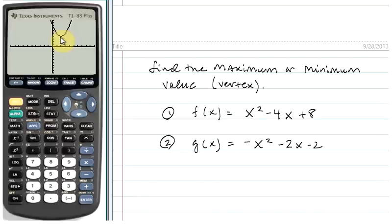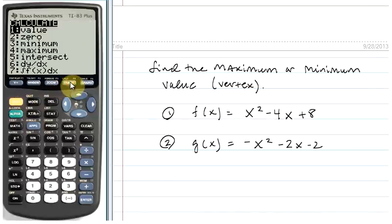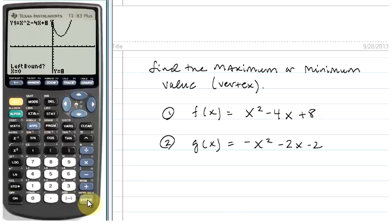To have the calculator tell us exactly where this minimum is, we will click the second key and then the trace key. That takes us to the calculate menu and notice that number 3 is the minimum. We will scroll down to number 3 and click enter to tell the calculator that we want it to tell us the minimum value for this function or the vertex.